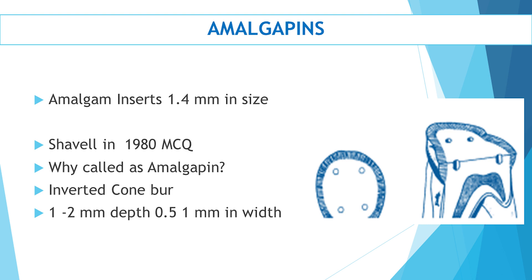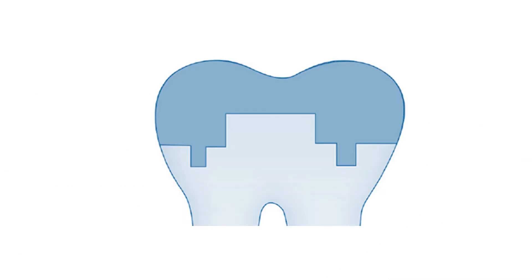You create a retentive feature with dimensions of 1 to 2 millimeter depth and 0.5 to 1 millimeter width. In this small retentive feature, the restoration flows and forms like a post in continuation with the restoration.